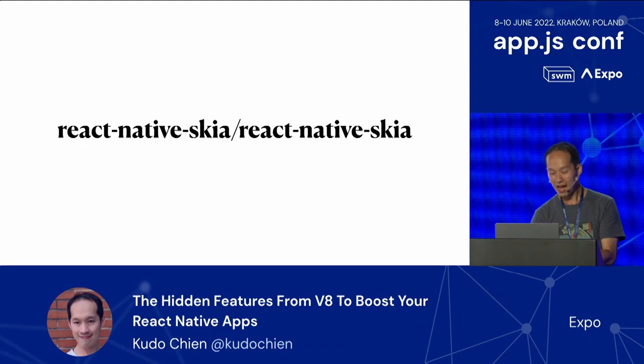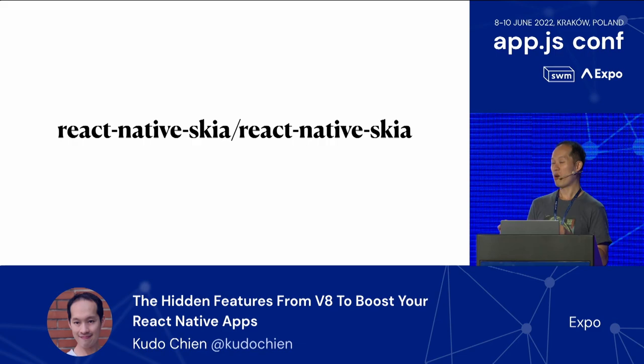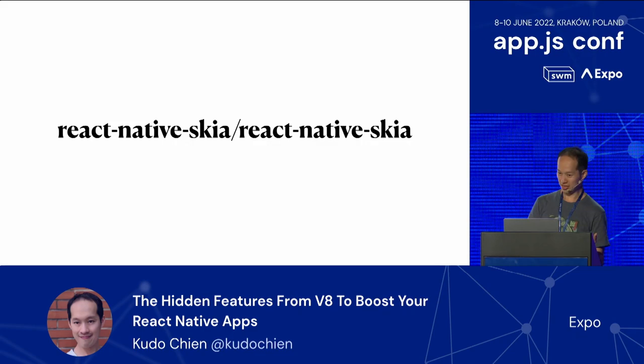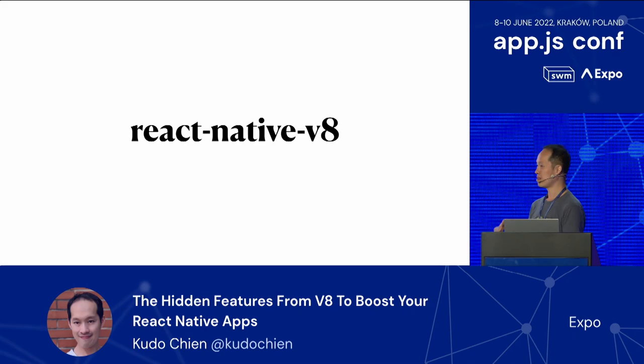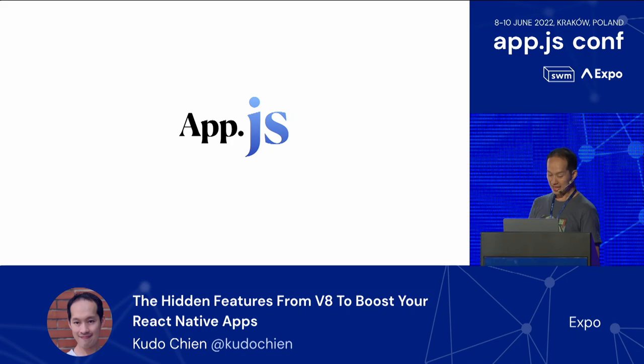One side project is React Native Skia. React Native Skia uses Skia as another rendering engine, so we can support new platforms such as Linux, or maybe even run React Native on Raspberry Pi devices in the future. The other one is V8. React Native V8 uses the V8 JavaScript engine for React Native apps. And today, I'm very excited to attend AppJS conference to talk about JavaScript engines for apps.